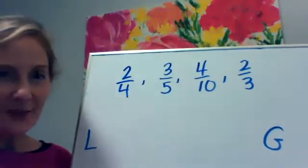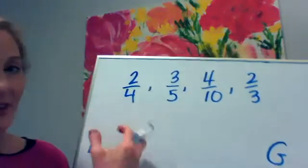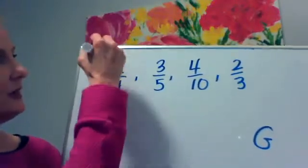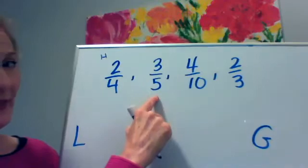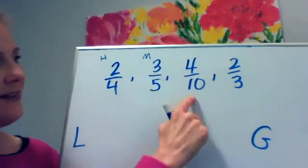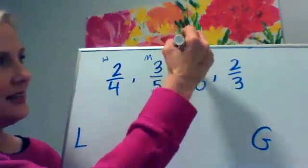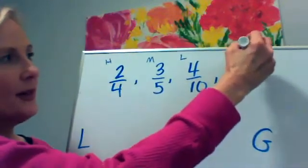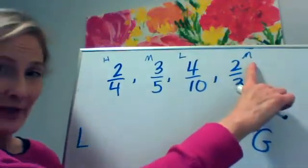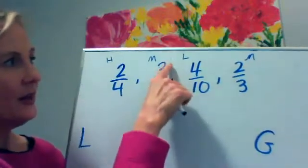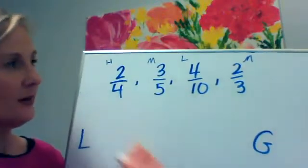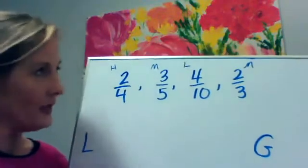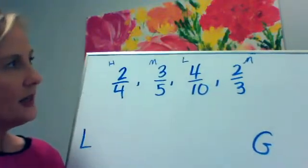Alright, last one. We're going to order these from least to greatest: two fourths — that's half; three fifths — that's more than half; four tenths — that's less than half; two thirds — that's more than half. One and a half thirds would be exactly halfway, and two and a half fifths would represent exactly half of the whole. So this is some pretty good information.